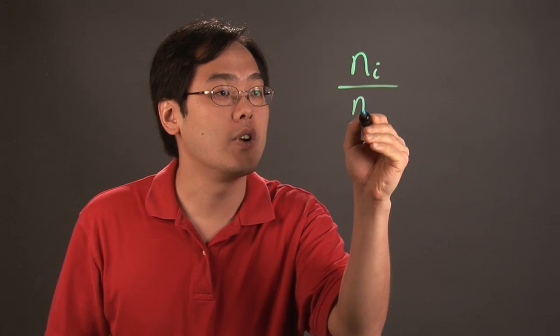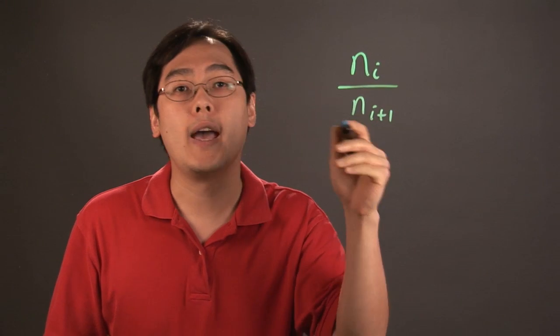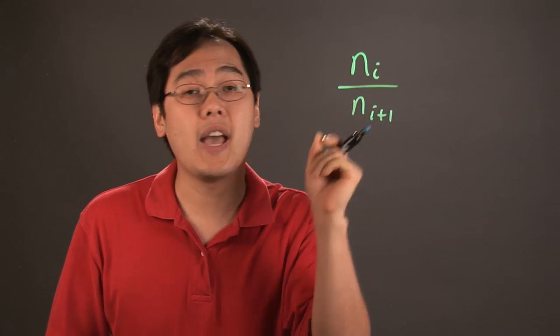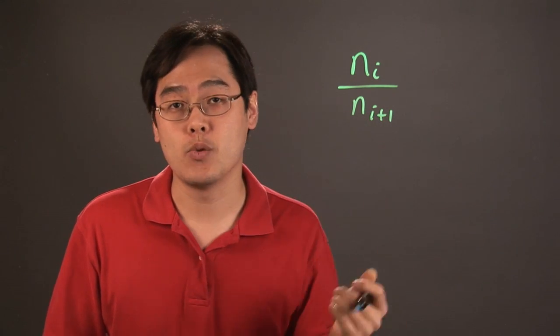So the ratio is n sub i over n sub i plus 1. Now, n is basically the numbers of the i-th order. The i plus 1 would be the next order.